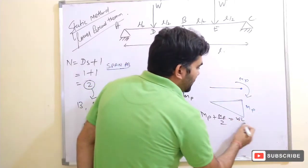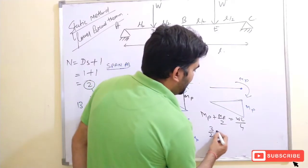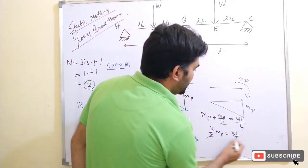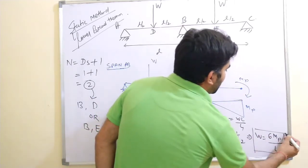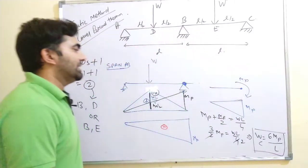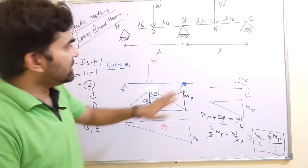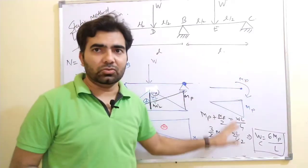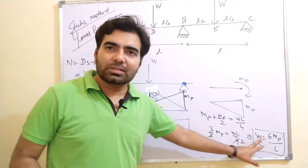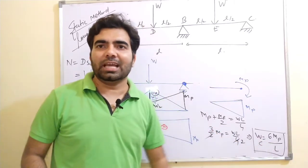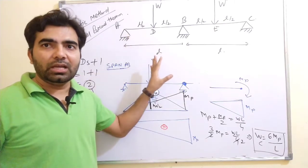The total value of the ordinate is WL by 4. So: 3 by 2 MP equals WL by 4, which gives W equals 6MP by L. This is the collapse load for this structure. The same solution applies for span BC with no change, so the answer is W_c equals 6MP by L.